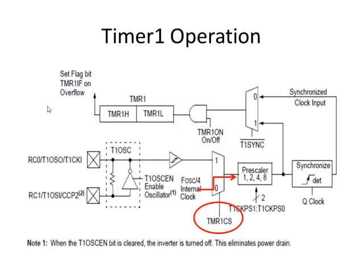The difference between a timer and a counter is that a timer counts clock pulses and a counter counts external pulses. The timer 1 CS bit is the clock select — it determines whether we are counting internal clock pulses or external pulses coming in from an external pin. This bit is in the control register and we can write to it.